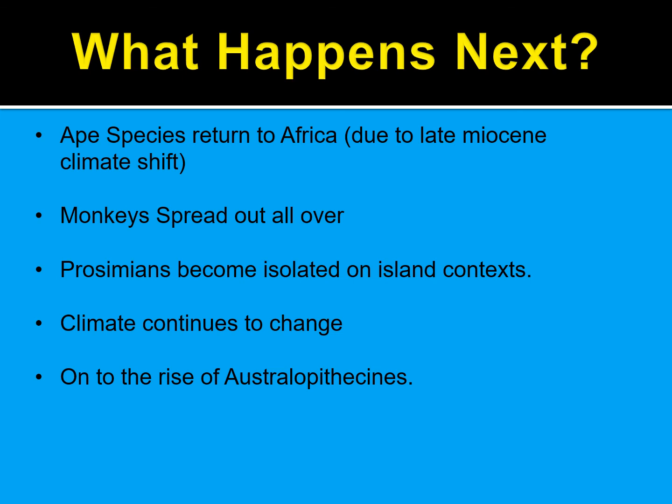After the Miocene, some ape species returned to Africa due to the late Miocene climate shift. Monkeys began to spread all over the world, including Asia and South America. Prosimians became isolated onto island contexts in Southeast Asia and Madagascar. The climate continued changing into subsequent periods, leading to the rise of the earliest members of our lineage — the Ardipithecines and Australopithecines — which we will discuss throughout the rest of the semester. This concludes early primate evolution. It's a huge gray area, and we still lack detail in these fossils to draw concrete connections between the earliest primates and the primates we have today.